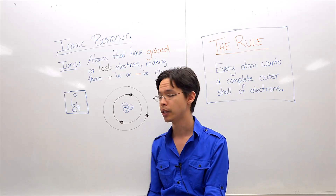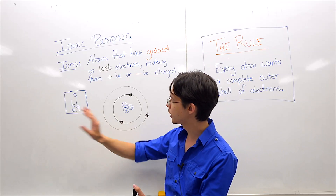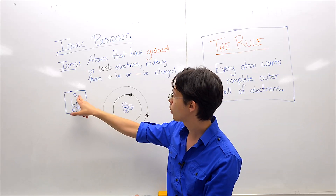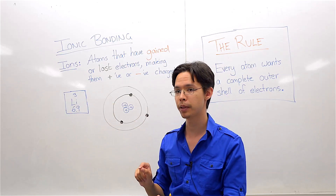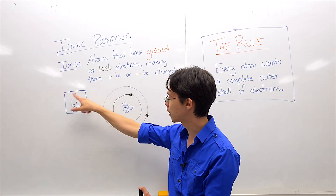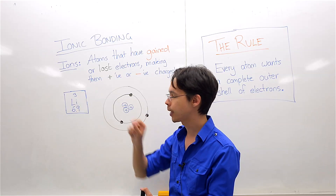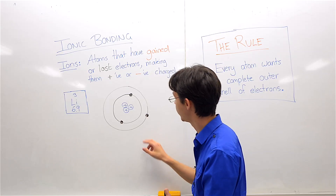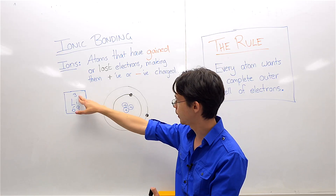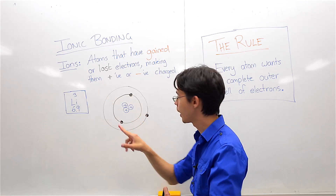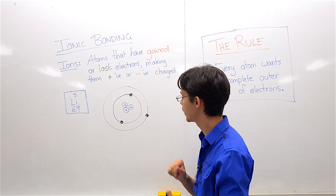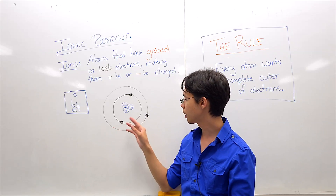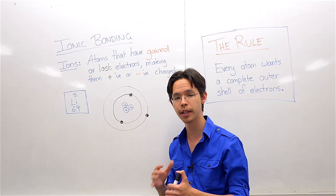Let's look at an example. In this case, I've got the element lithium. Here's an atom of lithium. It's got an atomic number — the small number at the top — that is the atomic number. It tells you how many protons your atom has. So if its atomic number is three, I have drawn three in the nucleus. There are also about four neutrons in there.